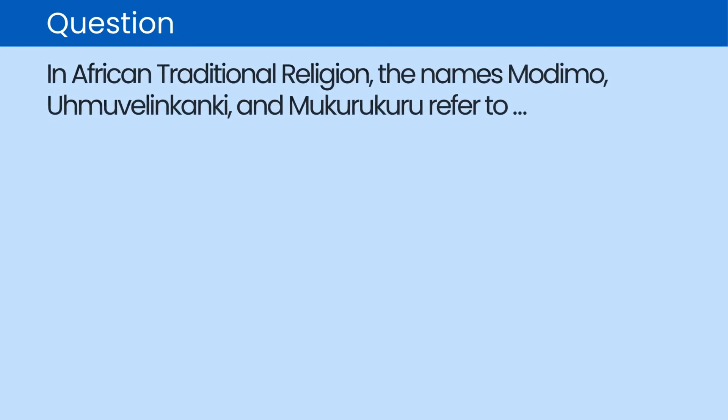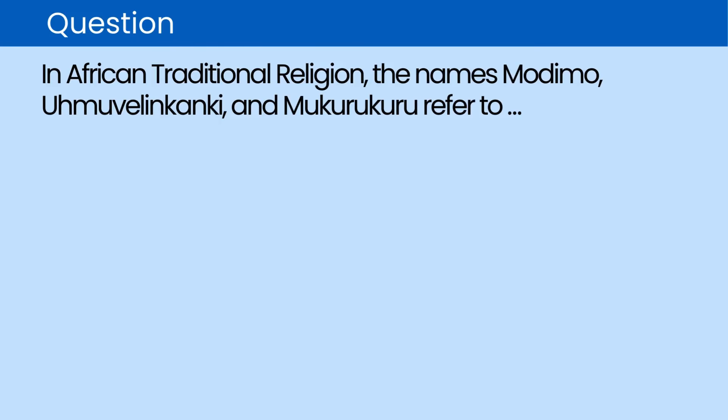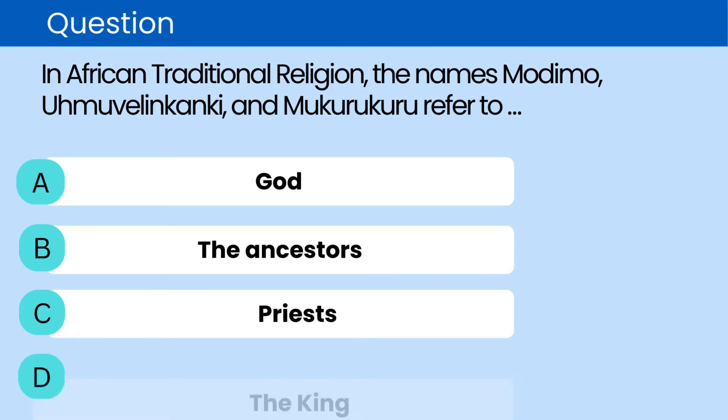Question: In African traditional religion, the names Modomo, Umuvalinkanki, and Mukurukuru refer to. A. God. B. The ancestors. C. Priests. D. The king. The correct answer is A. God.